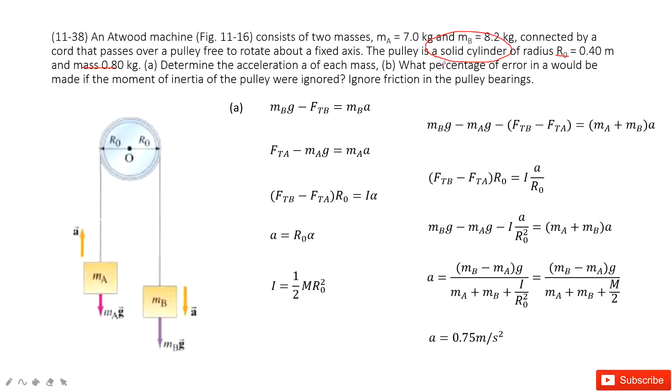First one, we need to determine the acceleration for each mass. So now we can see these two objects are connected by the string. This string never breaks or becomes too loose, so that means the acceleration is the same for A and B. So we assume that A moves up, B moves down.